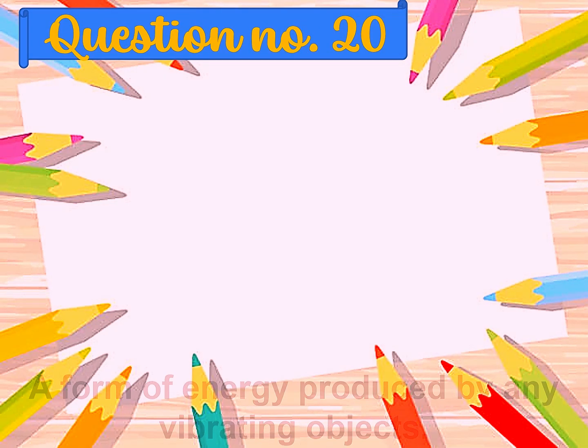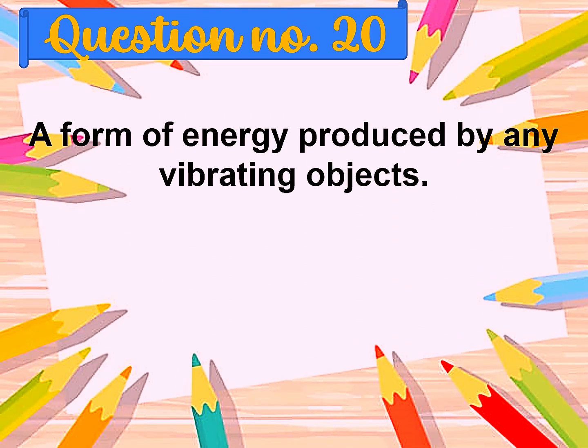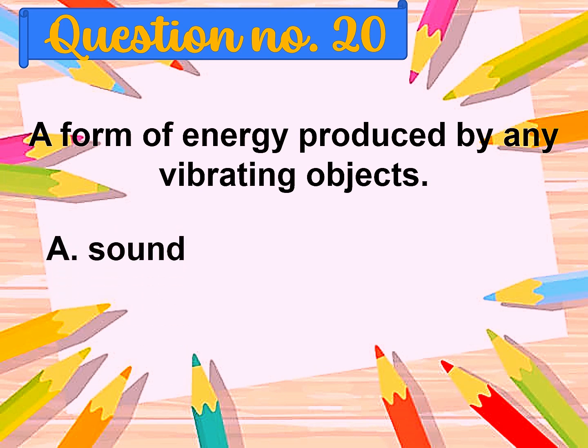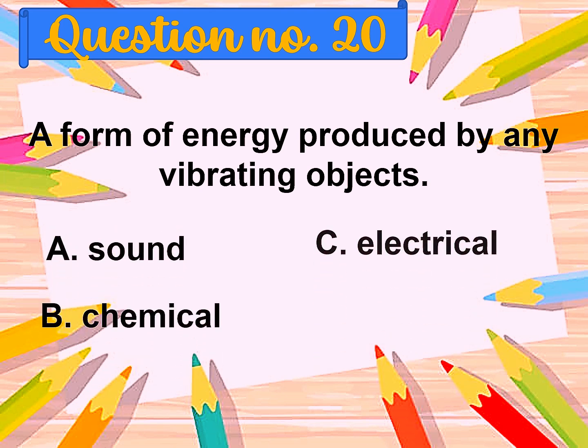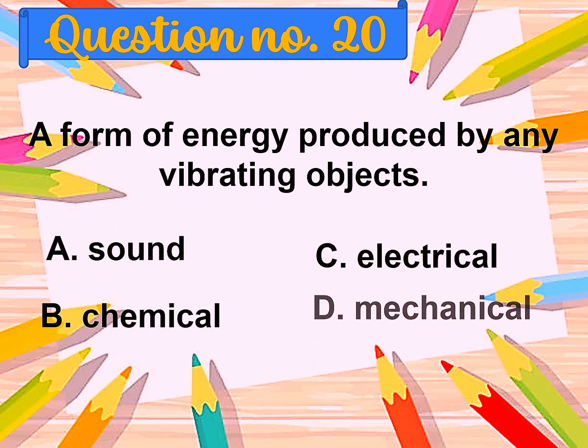Question number twenty: A form of energy produced by any vibrating objects? A. Sound, B. Chemical, C. Electrical, D. Mechanical. The correct answer is sound.